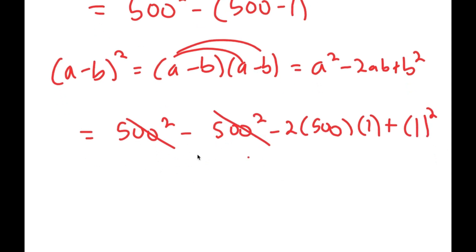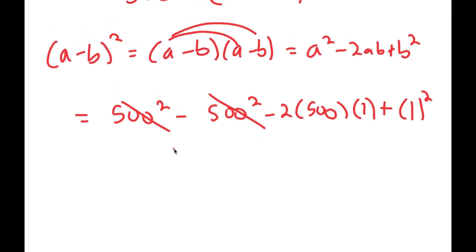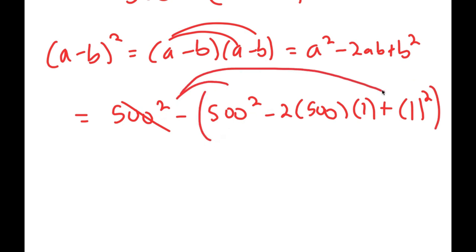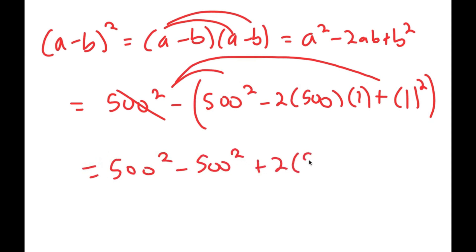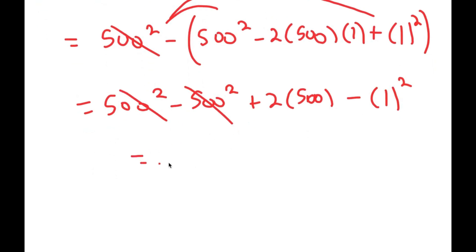However, this is actually in parentheses, so the negative sign distributes. This turns into 500 squared minus 500 squared plus 2 times 500 times 1, which is the same as 2 times 500, minus 1 squared. These two cancel out, so I get 1000 minus 1, which is equal to 999.